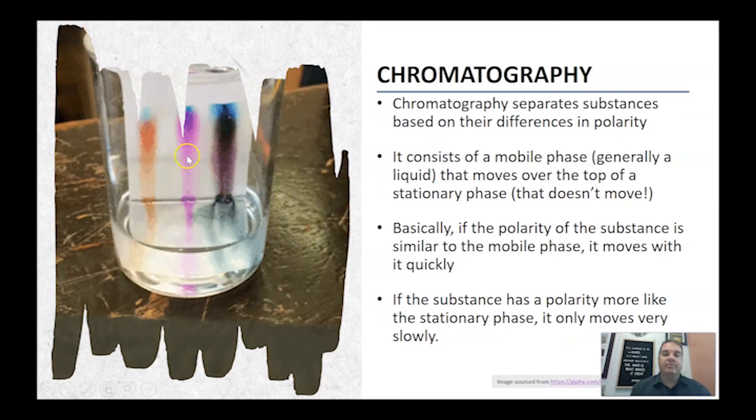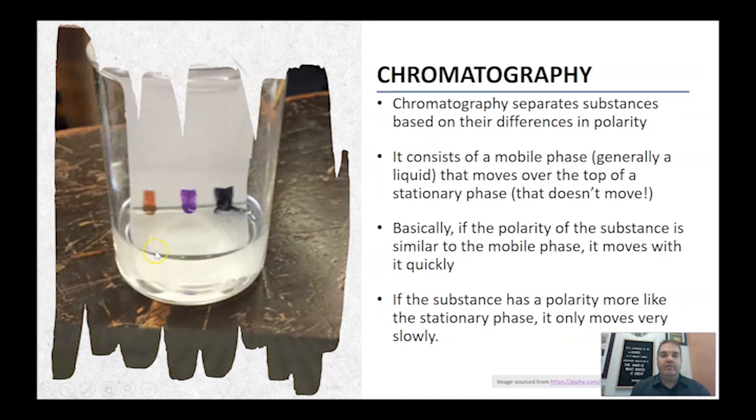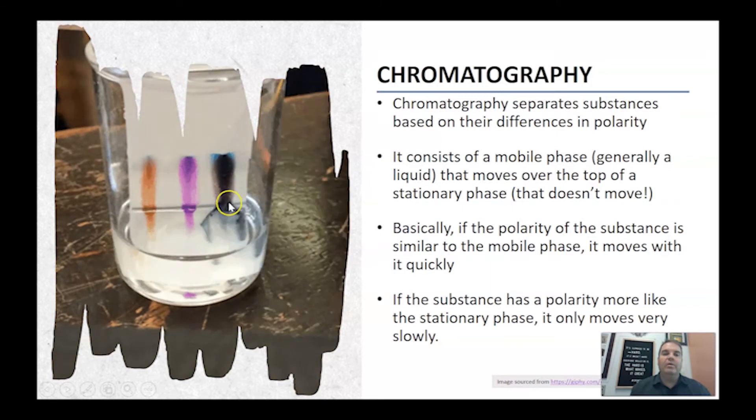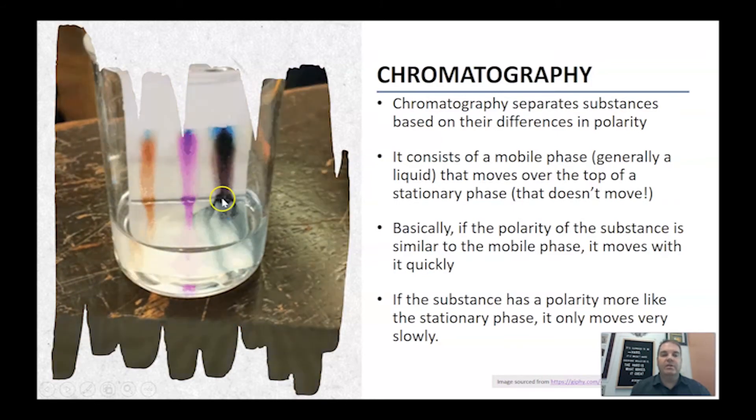In the case of this paper chromatography we're looking at, we have the paper there - that's the stationary phase. We have these three dots of ink on the side here.